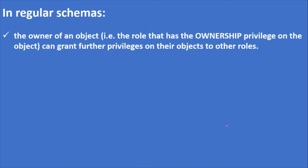In regular schemas, the owner of an object — that is, the role that has ownership privilege on the object — can grant further privileges on their objects to other roles. So here, the owner of the object itself gives the further privileges or grants on their objects to other roles.